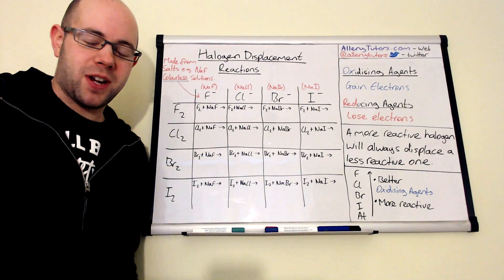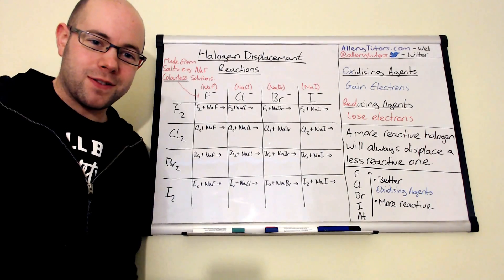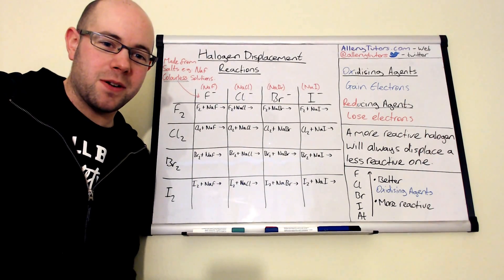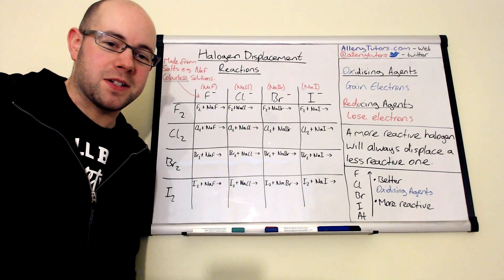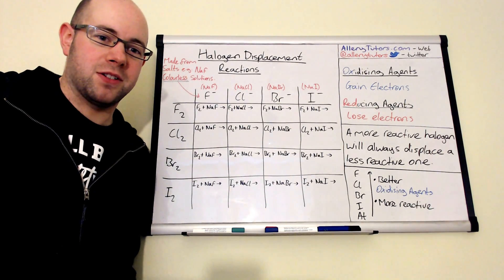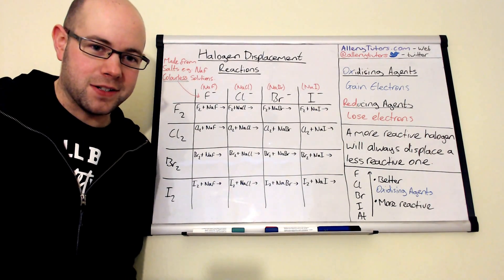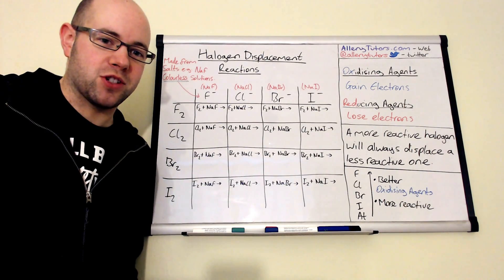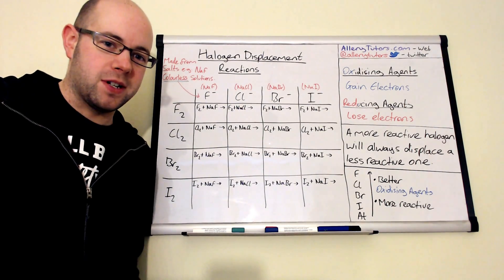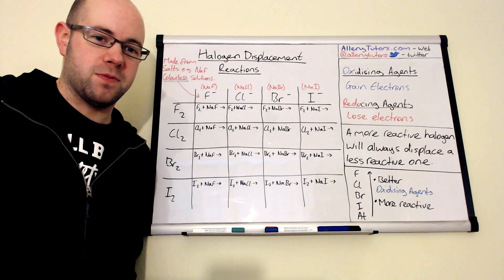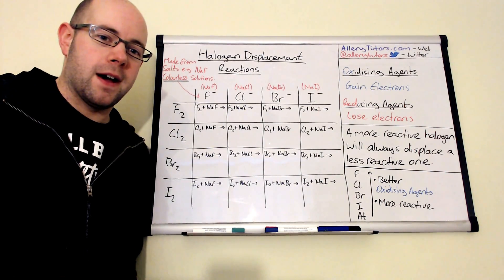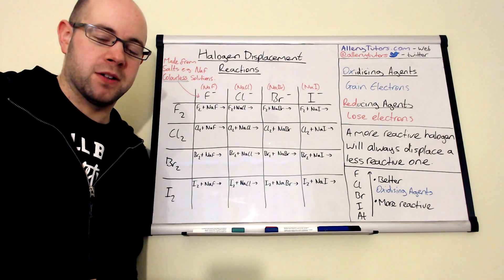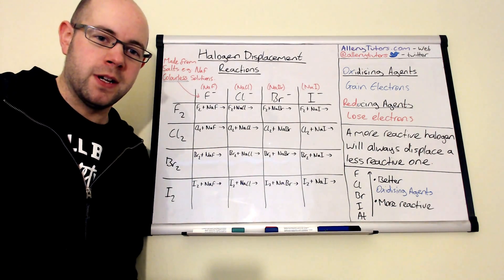Hi everybody, my name is Chris Harris and I'm from alorytutors.com. In this video we're going to look at displacement reactions of halogens. The word displacement effectively means swapping, so these are reactions in which we might be able to swap a halogen around, obviously depending on the reactivity.